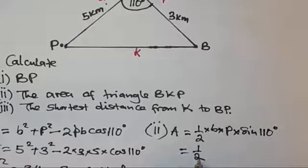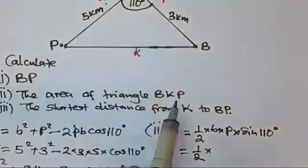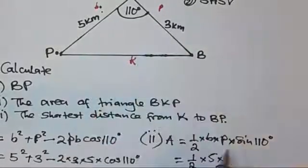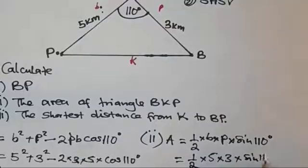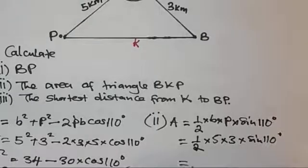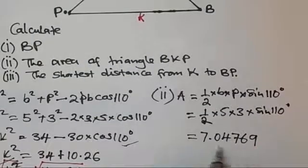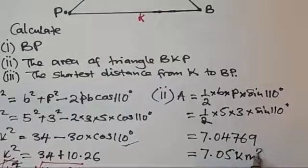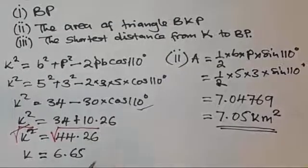Substituting the values: b is 5 and p is 3, so Area = ½ × 5 × 3 × sin(110°). When you multiply and divide by 2, the area equals 7.0476... Rounding to two decimal places — or three significant figures as per exam standard — the area is equal to 7.05 square kilometres.